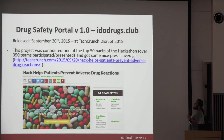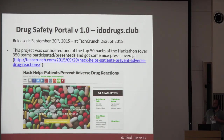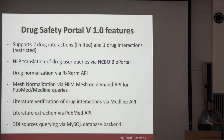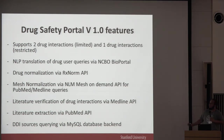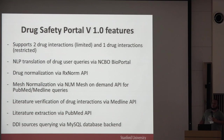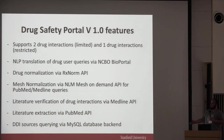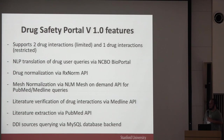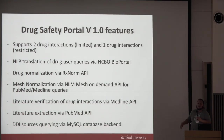This was released September 20th at TechCrunch Disrupt Hackathon in the Bay Area. The project was considered one of the top 50 hacks of the hackathon and got some nice press. The V1 features: it supported two-drug interactions, had a limited set of 350 drugs and a couple dozen adverse events, some one-drug interactions worked. It had NLP translation of drug user queries using BioPortal, drug normalization via RxNorm API, mesh normalization via Mesh, literature verification using Medline API, and literature extraction via PubMed — a mashup of all these APIs in one convenient interface.